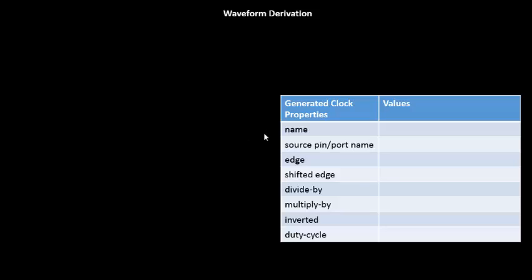It's very simple. For example, this is one of the tables of the generated clocks and these are the values that have been given to us. The name of the generated clock is given as 'gen_clock.' The source name or source port pin name is the master clock, and the edge is given as 2, 4, 6. The rest are dashes — no values for the remaining ones. So out of these three pieces of information, how can we derive a generated clock?